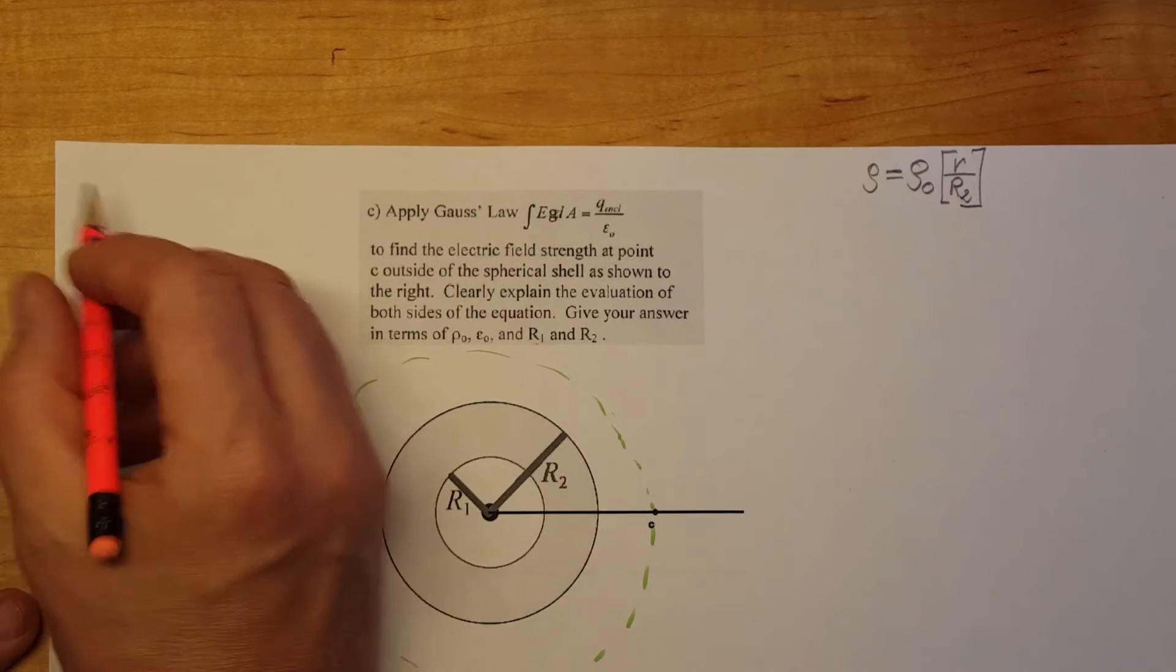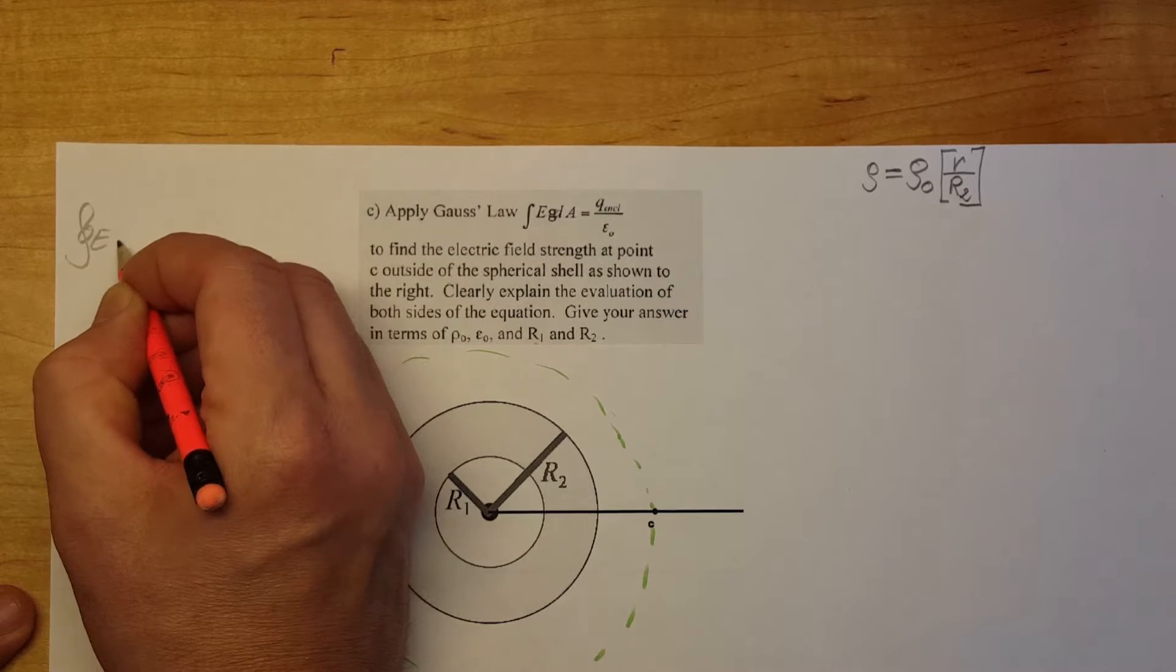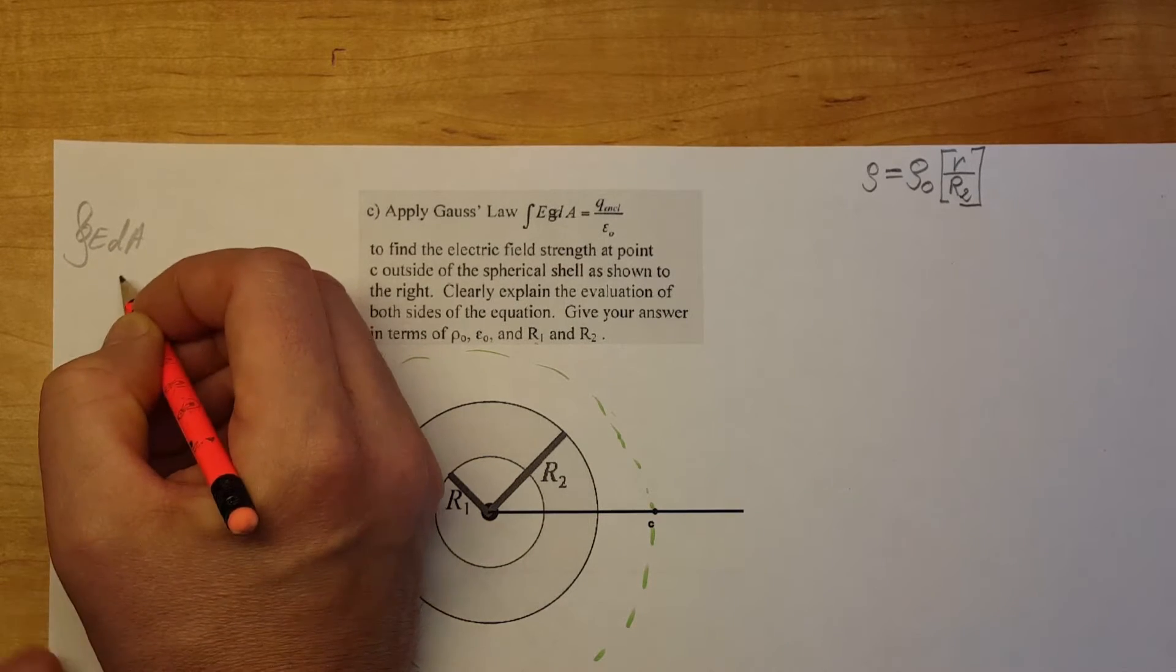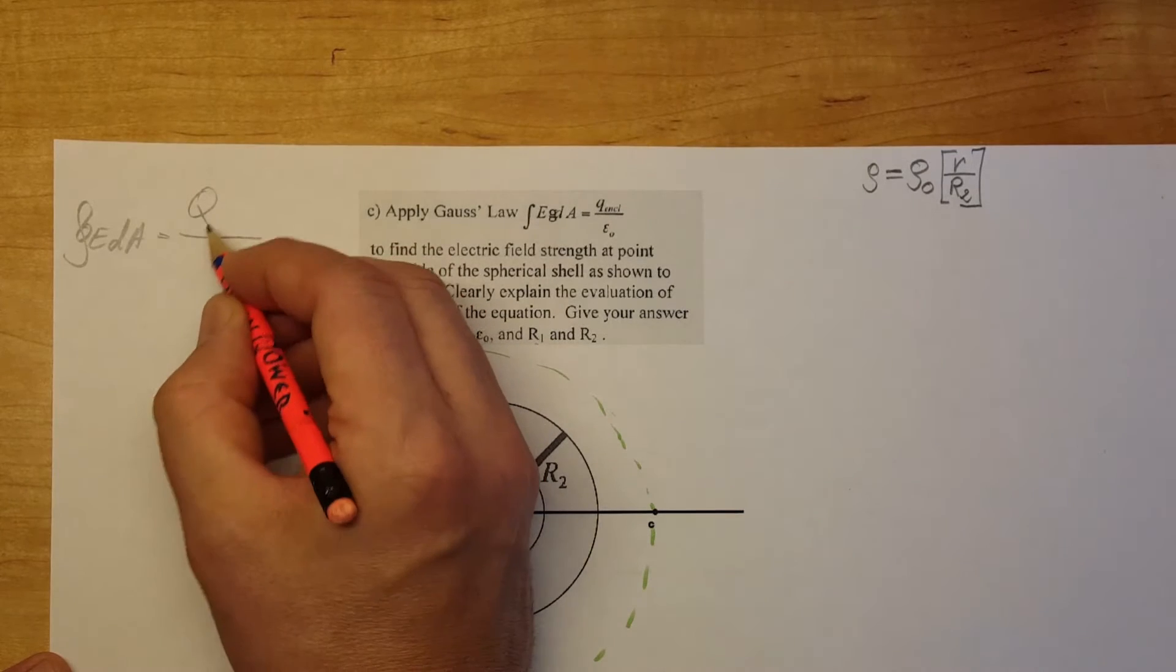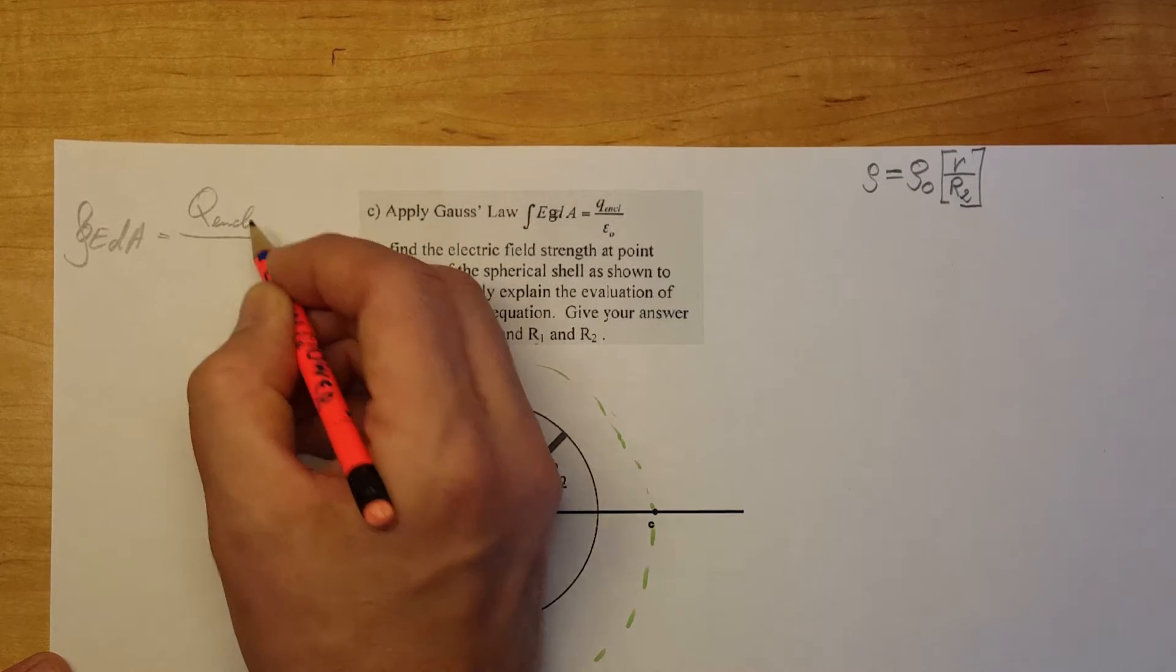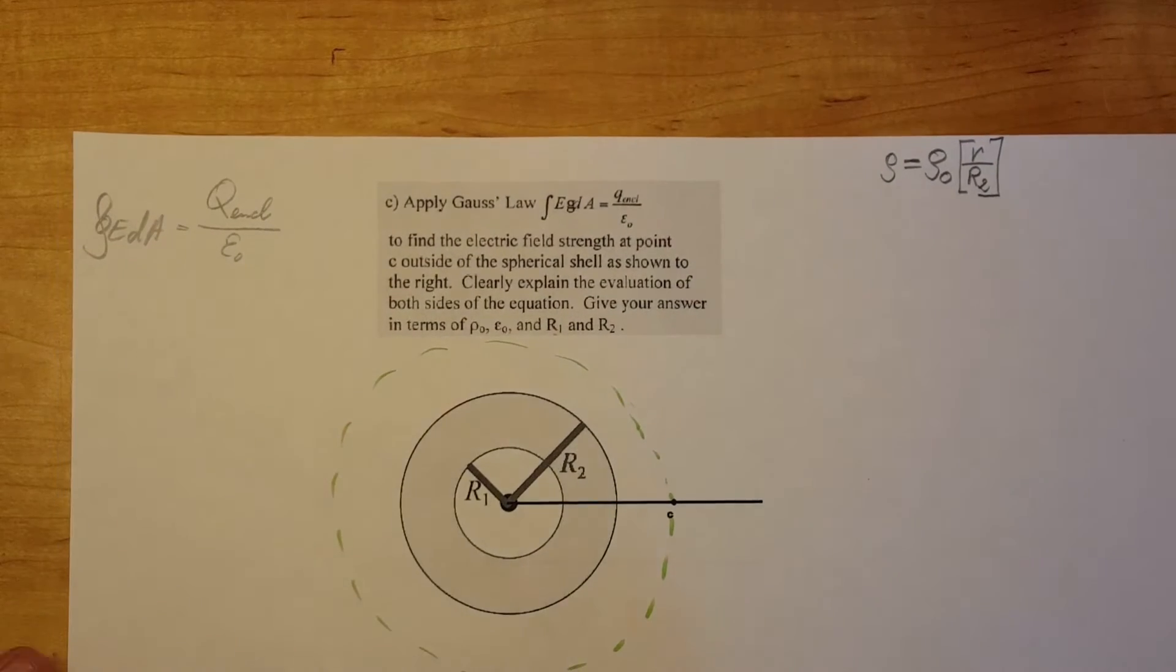So Gauss's formula, Gauss's law formula: integral of E times dA equals Q enclosed, Q enclosed, charge enclosed, over E naught, the permittivity of space.